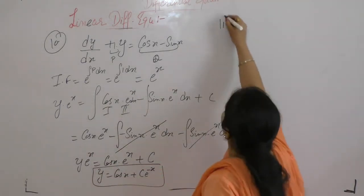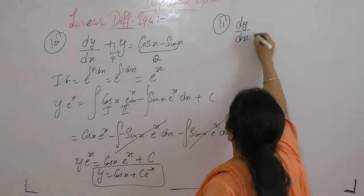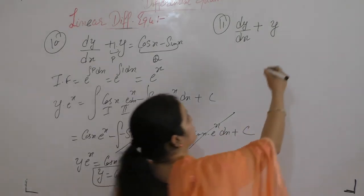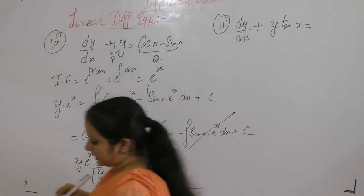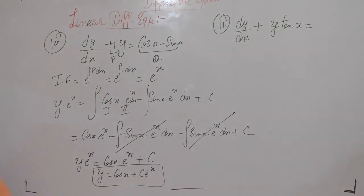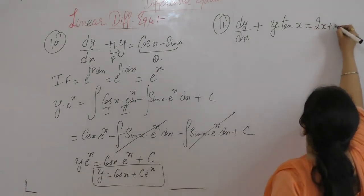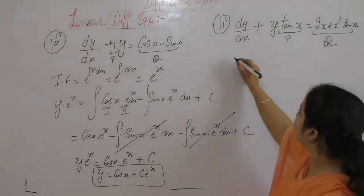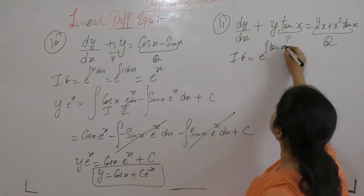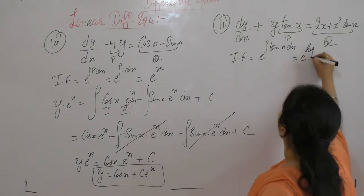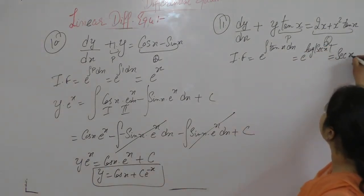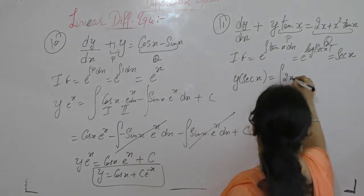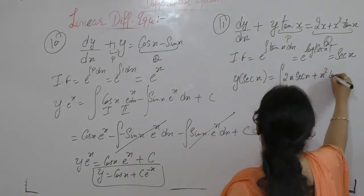Next, solve the differential equation dy/dx + y · tan(x) = 2x + x²·tan(x). We have p = tan(x) and q = 2x + x²·tan(x).